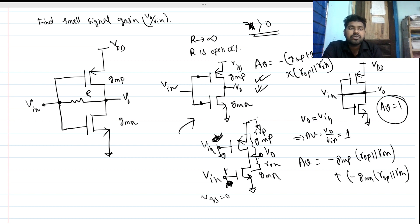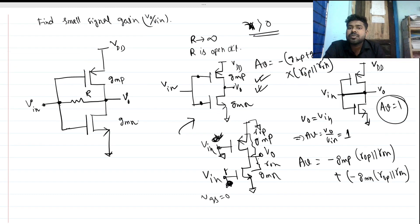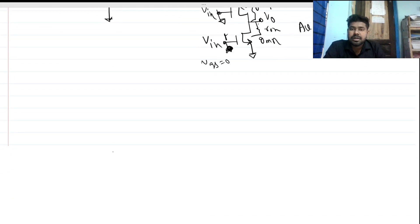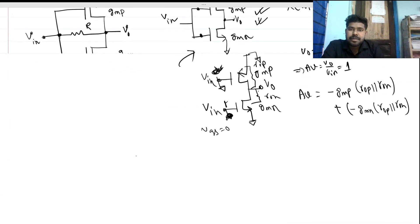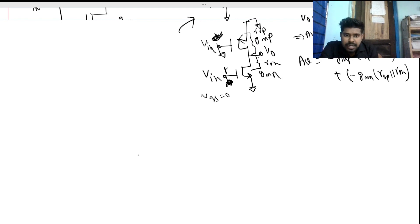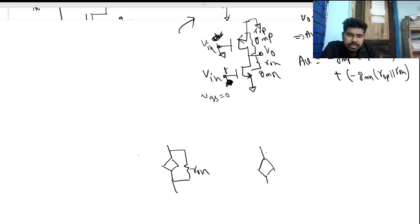Now let's do the small signal model for the circuit. For the small signal model we have dependent sources. Let's say this is ron, and we have another dependent source — this is rop.